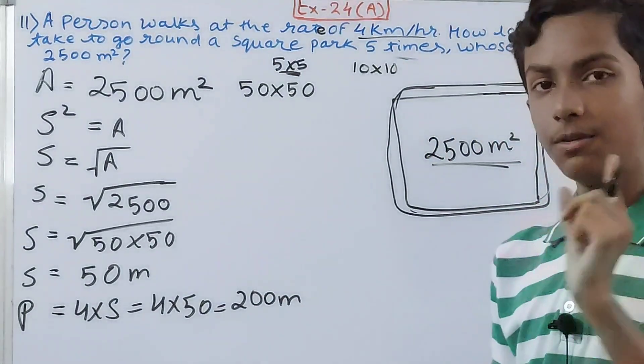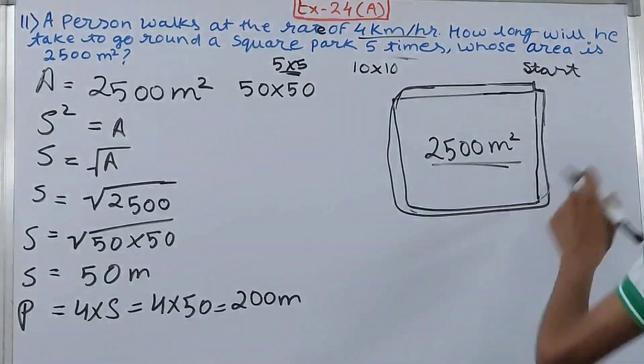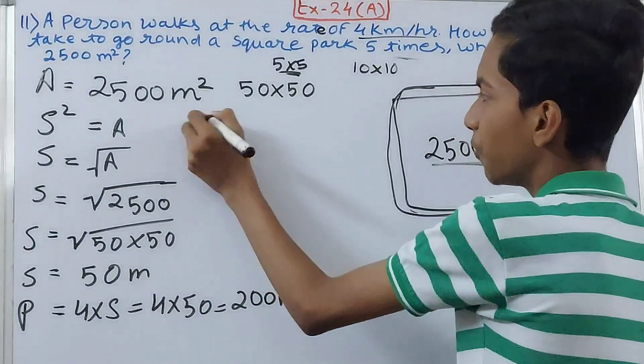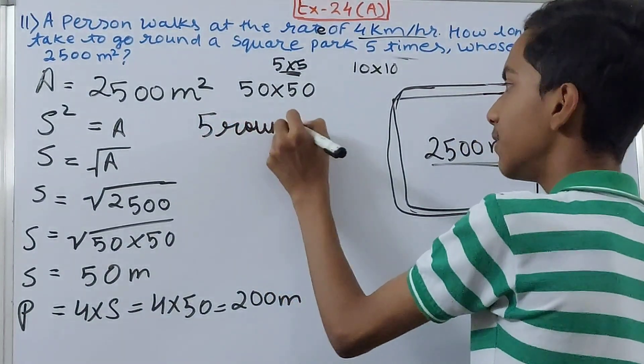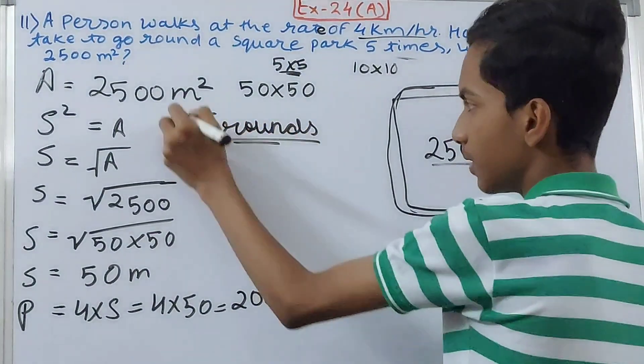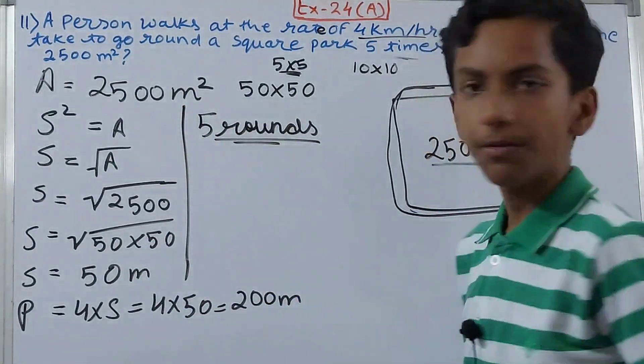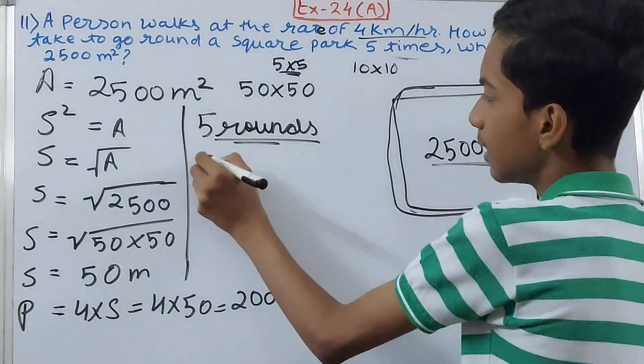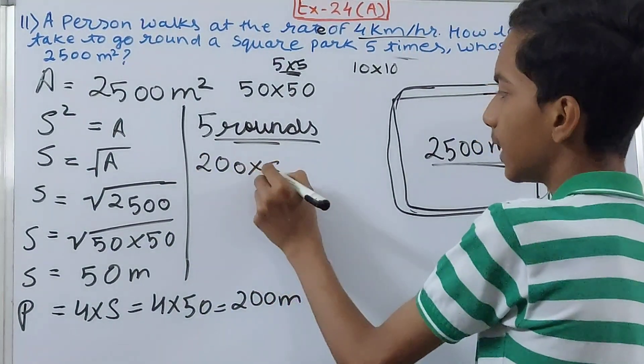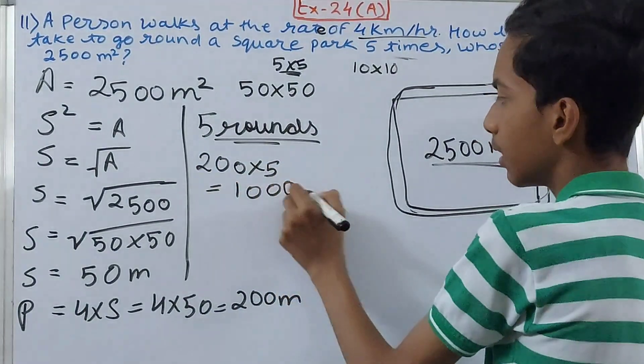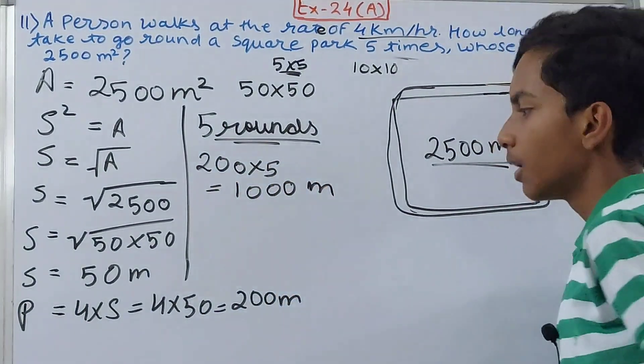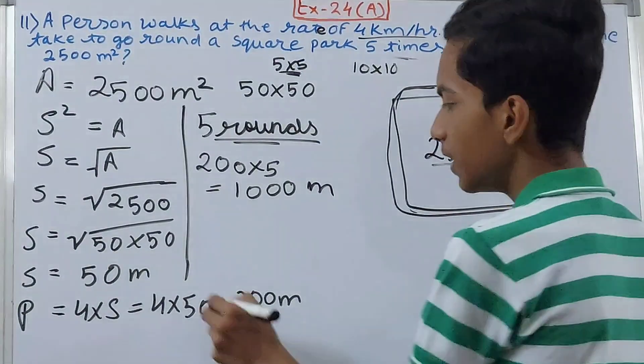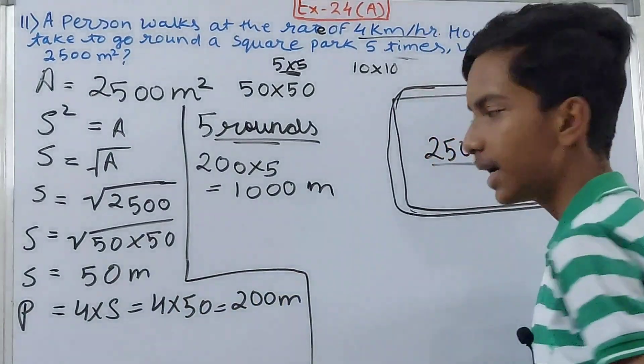200 meters is not 5 times but only 1 time. This means going around 1 time he covers 200 meters. So 5 rounds will be 1 round multiplied by 5, so we get 200 times 5, and that is 1000 meters, or simply 1 kilometer.